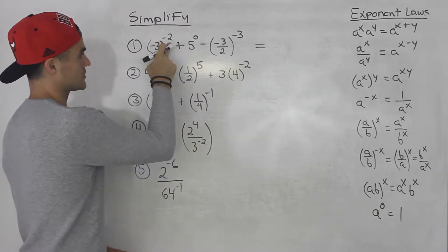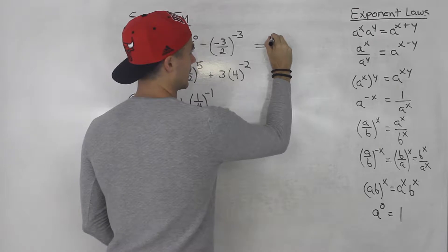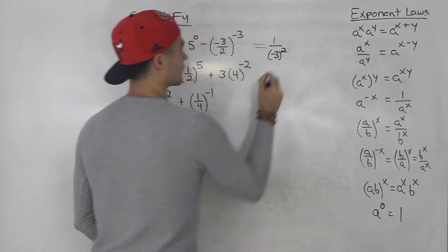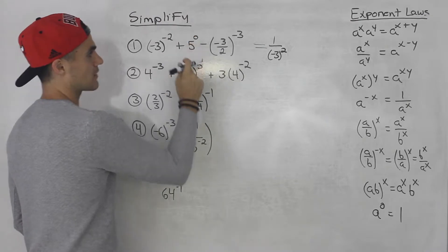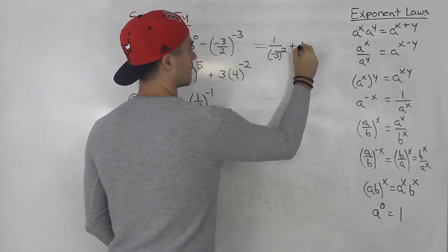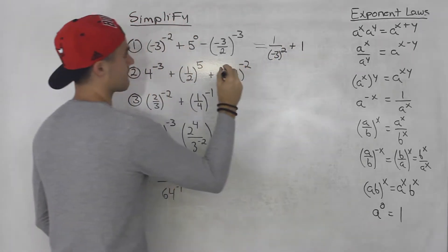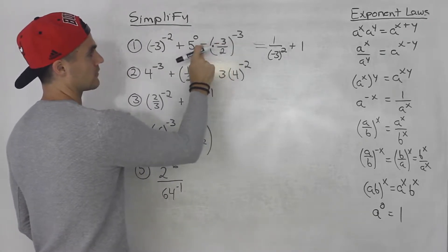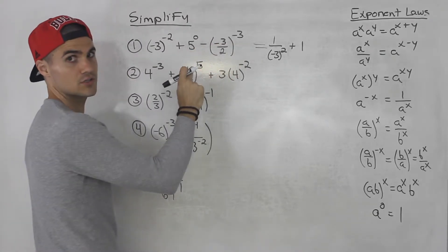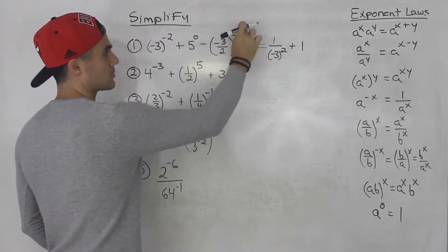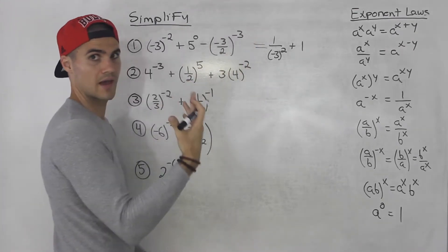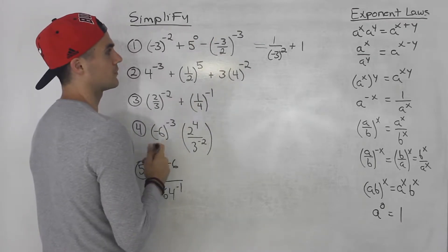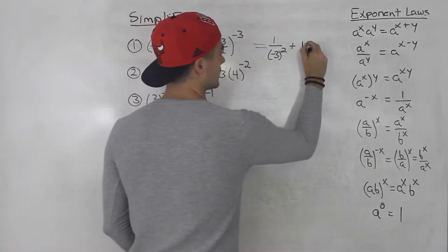So negative three to the power of negative two would be like one over negative three to the power of two. Five to the power of zero is just one, so we're going to be adding one here. And then we're going to be subtracting negative three over two to the power of negative three. Now this negative and this negative don't turn into a positive because this negative is part of the exponent. With BEDMAS, you do exponents first before you multiply, so this minus we would keep.